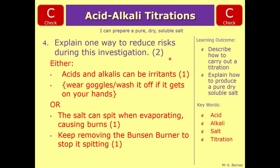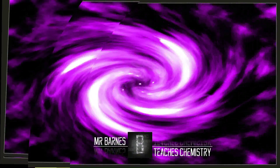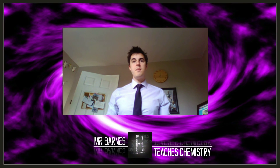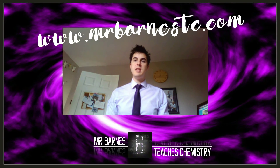That ends this video. The review section asks you to plan an investigation to produce a pure dry salt of potassium chloride from potassium hydroxide and hydrochloric acid. In your plan, include all the equipment needed, a step-by-step method to produce the pure dry solid of potassium chloride, and the hazards and how to minimise them. Hopefully you've enjoyed the video — click the subscribe button below and visit mrbarnestc.com for more.